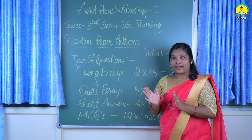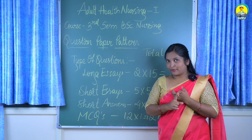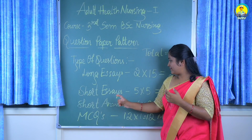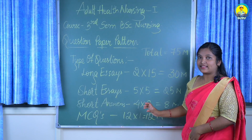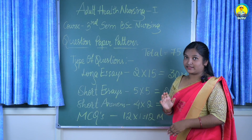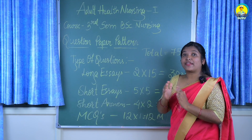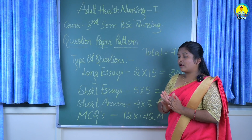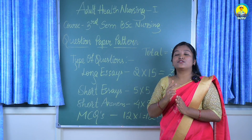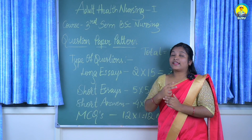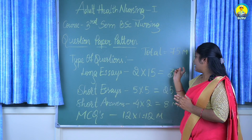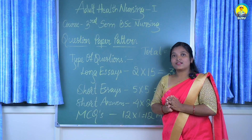This is about the question paper pattern. We have long essay type of questions, short essay type of questions, short answers, and multiple choice questions in the examination of this Adult Health Nursing first subject. The first thing is long essay — we are going to attempt two long essay questions and each question carries 15 marks, making a total of 30 marks for the long essay section.